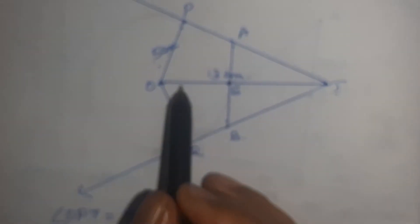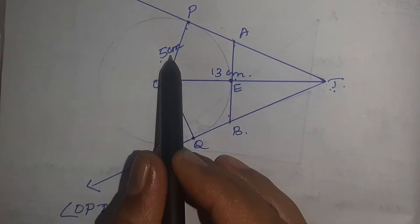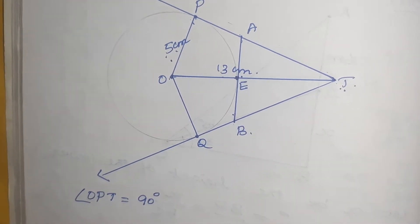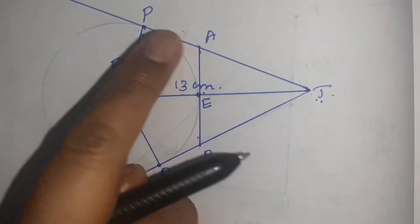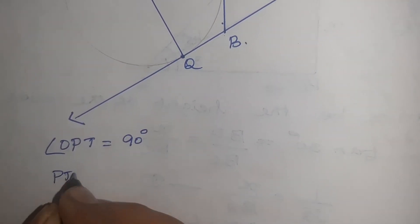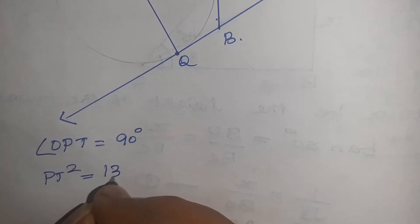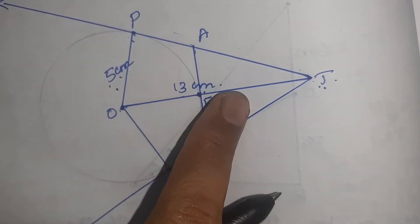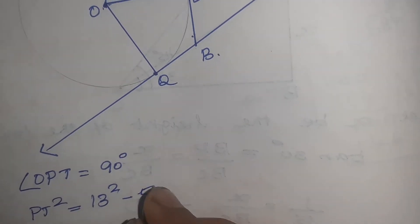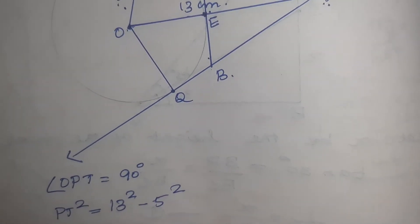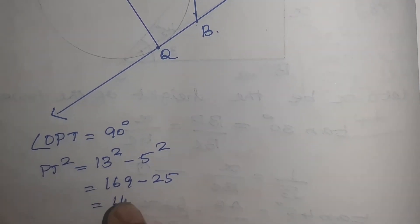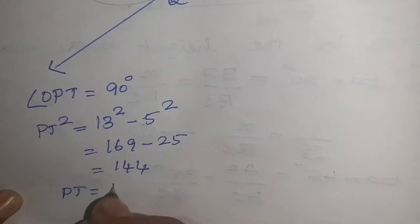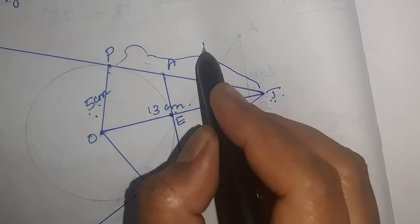Then next, what is given? OT is 13 centimetre and radius OP is 5 centimetre. By using Pythagorean theorem, we can calculate PT. PT square equal to 13 square minus 5 square. So, 169 minus 25, that is equal to 144. So, PT equal to 12 centimetre.